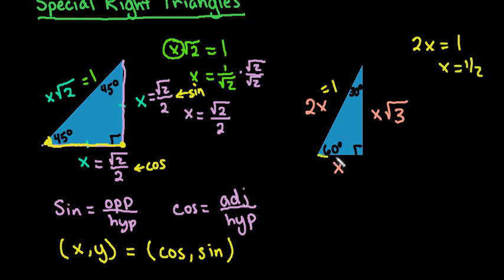When it is set up with this orientation where the 60 degrees is on the bottom, this side will always be 1/2. So my x coordinate will always be 1/2.